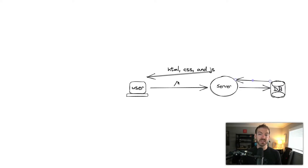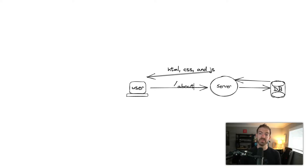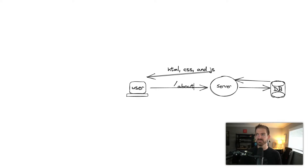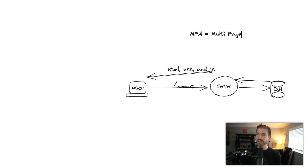Now what happens if we then go to a new page? The next time we go to another page — if we go to slash about, for example — the same thing happens. We make a full request back to the server. The server goes to a database if it needs to, then responds back with HTML, CSS, and JavaScript. And this is basically where the idea of MPA, or multi-page application, comes from.